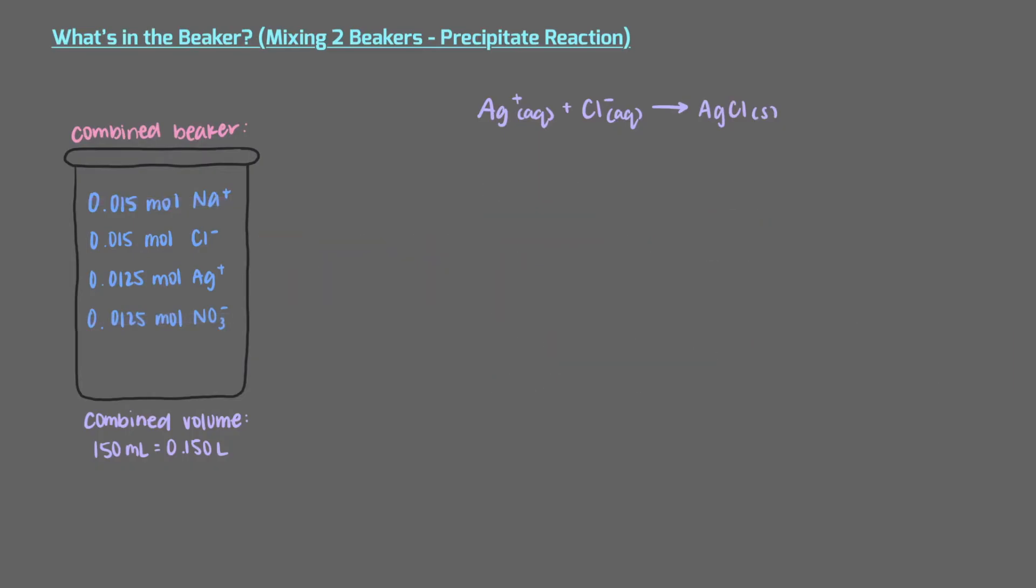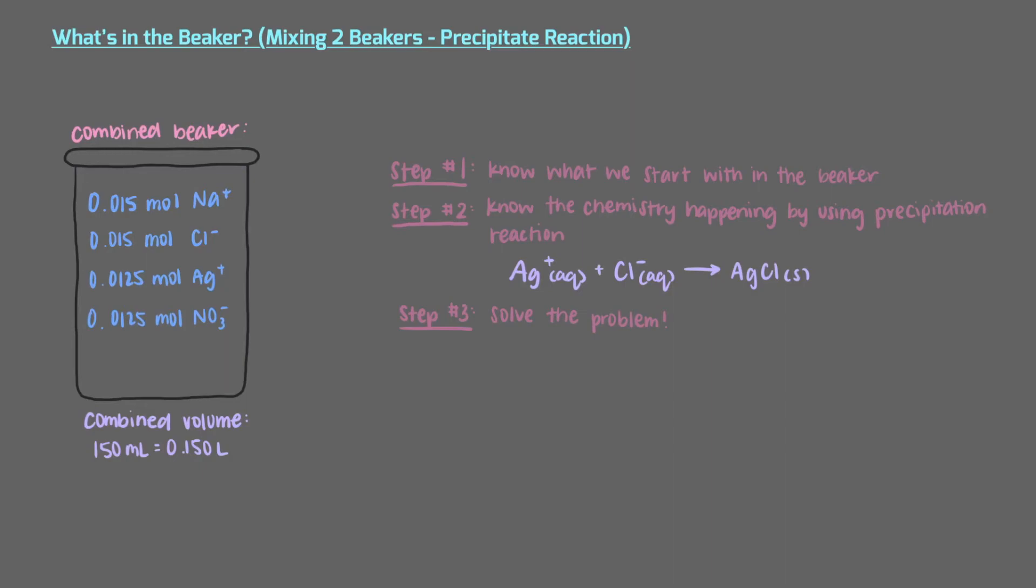We're so close. We know what we started with in our beaker. That was step one. We know what chemistry is going to happen, the precipitation reaction, and that's step two. The third and final step is to solve the problem. For that, we have to talk about limiting reagents.